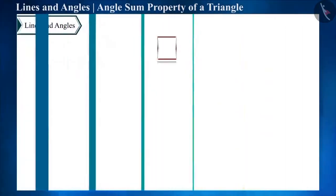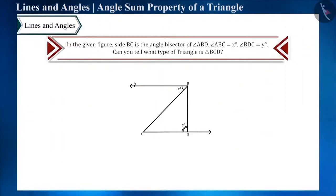In the given figure, side BC is the angle bisector of angle ABD. Angle ABC is equal to x degrees and angle BDC is equal to y degrees. Can you tell what type of triangle is triangle BCD? You can pause the video and solve this question.